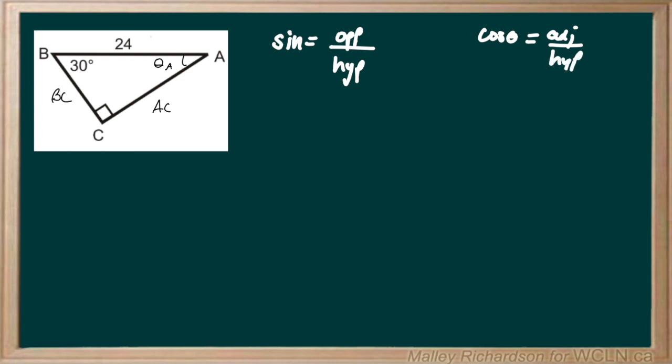So to find our side length of AC, we need to use sine theta because AC is opposite to our 30 degrees. So we're going to have sine theta, which is 30 degrees, equals our opposite of AC over hypotenuse of 24.